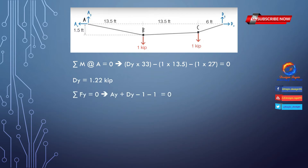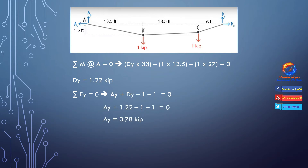Using summation of Fy equals zero: Ay + Dy − 1 − 1 = 0. Substituting Dy = 1.22 kips gives Ay = 0.78 kips. After calculating reactions Ay and Dy, the updated free body diagram looks like this.